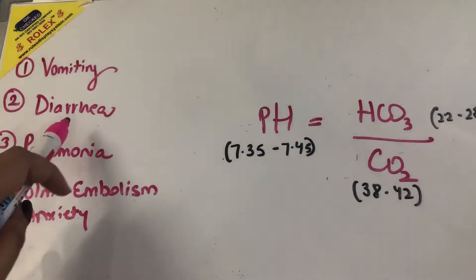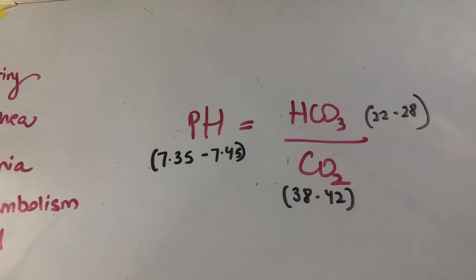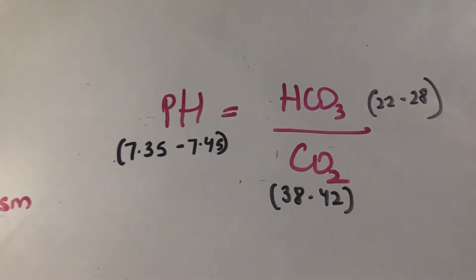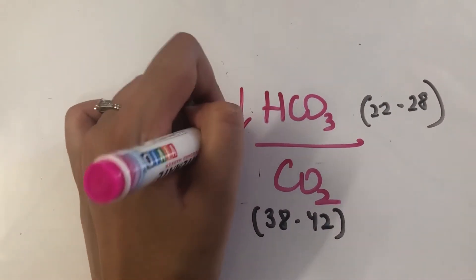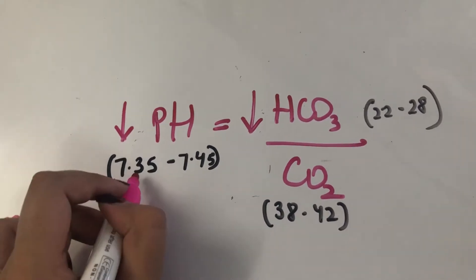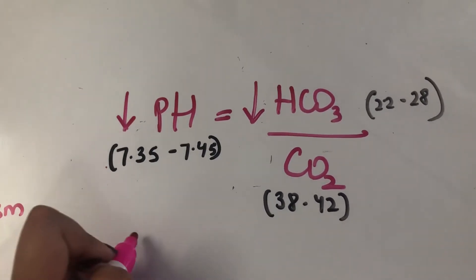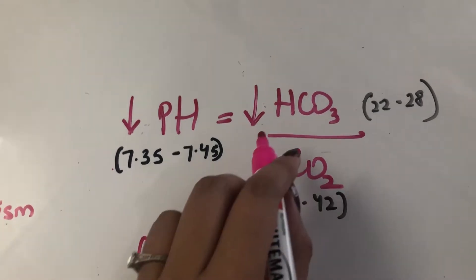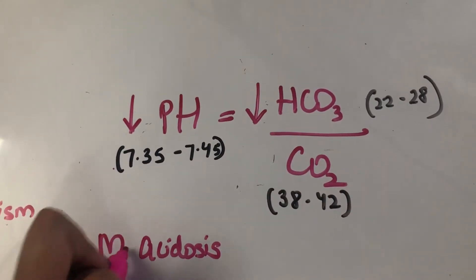The next condition is diarrhea. Okay. So in diarrhea, what happens is that we lose a lot of bicarbonate, right? So when you're losing a lot of bicarbonate, the levels go down and the pH also goes down. So the pH falls below 7.35 and we develop acidosis. And what kind? Again, metabolic acidosis.